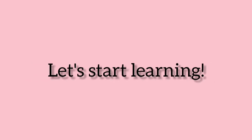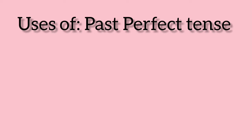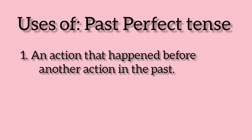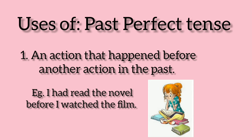Let us begin. The past perfect tense is used to talk about an action that happened before another action in the past. For example, 'I had read the novel before I watched the film.' That means the action of reading the novel was done before the action of watching the film.